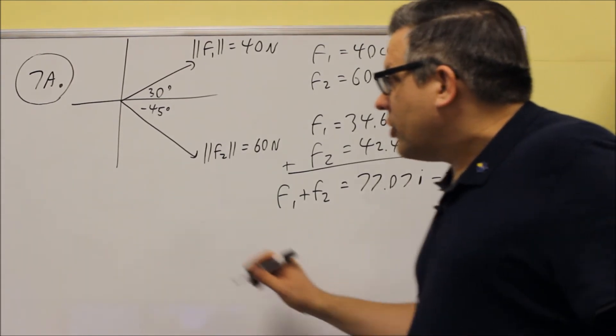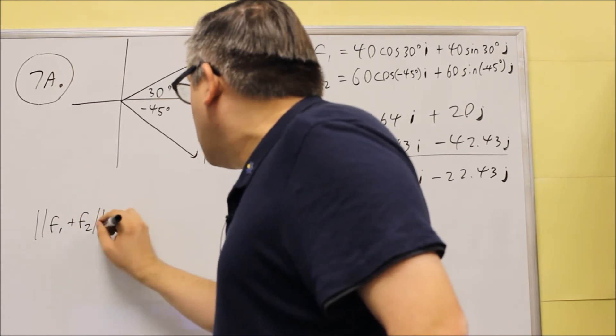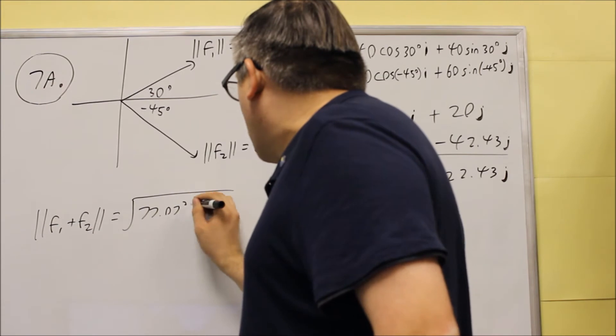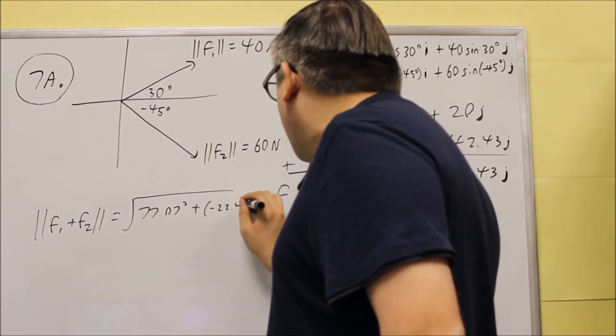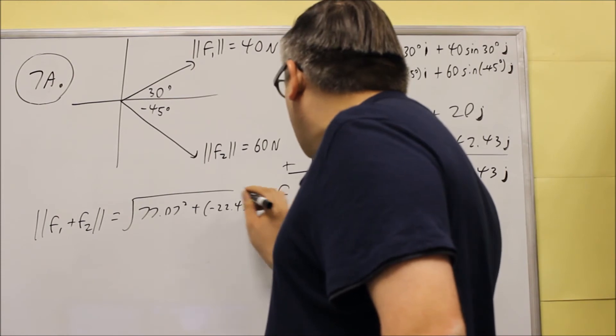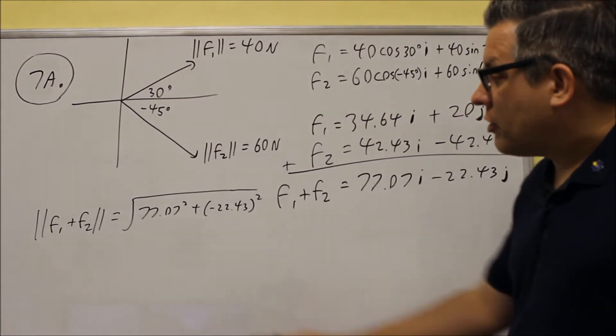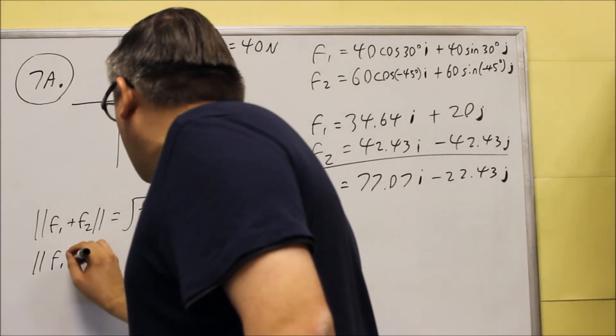We'll do that over here. So the magnitude of F1 plus F2 is going to be the square root of 77.07 squared plus, negative 22.43 squared. So we're doing that formula. The magnitude formula, square each of the components.